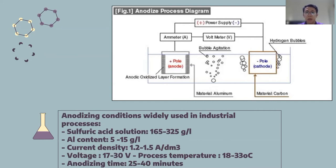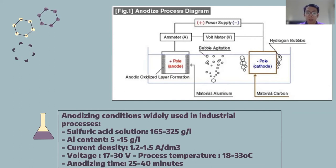Anodizing conditions widely used in industrial processes: sulfuric acid solution around 165 to 325 grams per liter, and aluminum 5 to 15 grams per liter. Current density is 1.2 to 1.5. Voltage is 17 to 30 volts. Process temperature is 18 to 33 degrees Celsius. Anodizing time is 25 to 40 minutes.